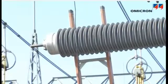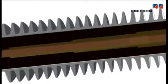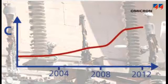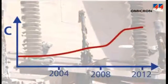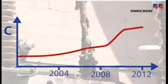Capacitance values of bushings show if there have been breakdowns between capacitive layers. A rise in capacitance of more than 10% is normally considered dangerous.